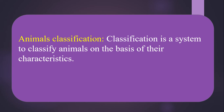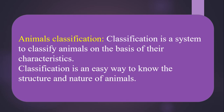Aristotle and Carolus Linnaeus are notable names in the history of classification. What is classification? Classifying something is called classification. Classification is a system to classify animals on the basis of their characteristics. We can also say that classification is an easy way to know the structure and nature of animals.